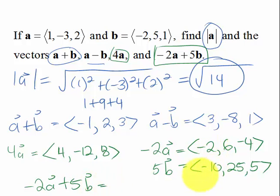just need to now add those and that would give me negative 12 for the first component, and 31, and 1.